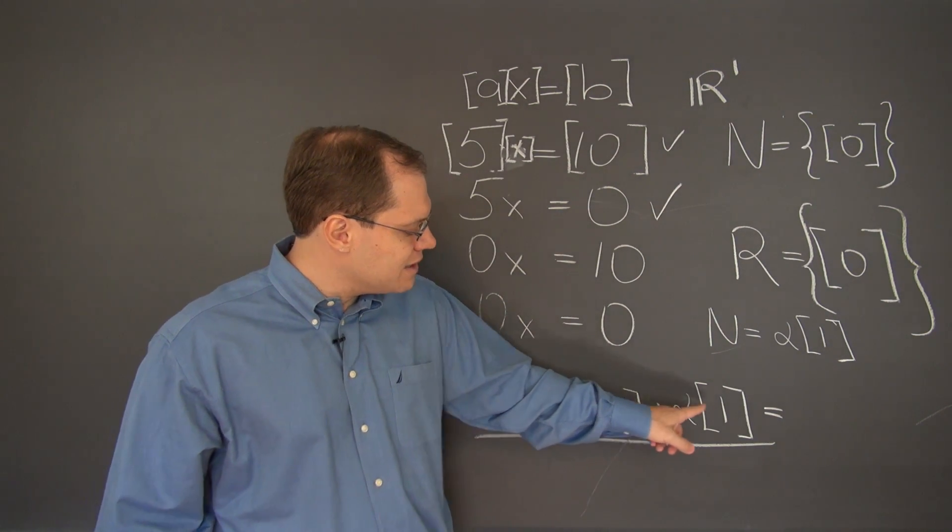Adding it to any vector doesn't change anything. And combining and bringing alpha inside the vector just gives us this, which reads a little bit more readily as any number.